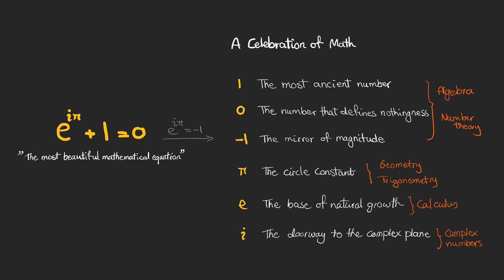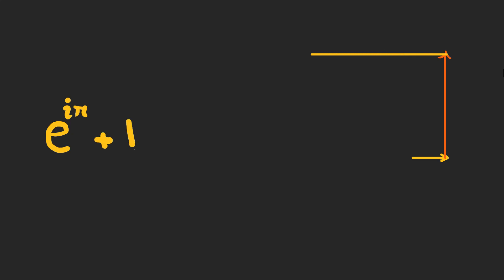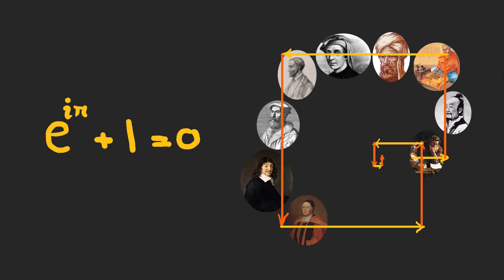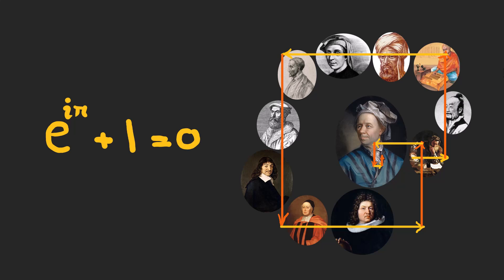There is a lot of history behind each of these components and fields, and they are gathered together like a celebration of math — and of the people who contributed to it. I find this equation beautiful because when I look at it, I see the efforts of many people united in one simple expression. That's why this equation is a celebration of mathematics and of the human beings who worked over thousands of years to develop these ideas. If you want to know more about the history of numbers, I suggest you watch this video.